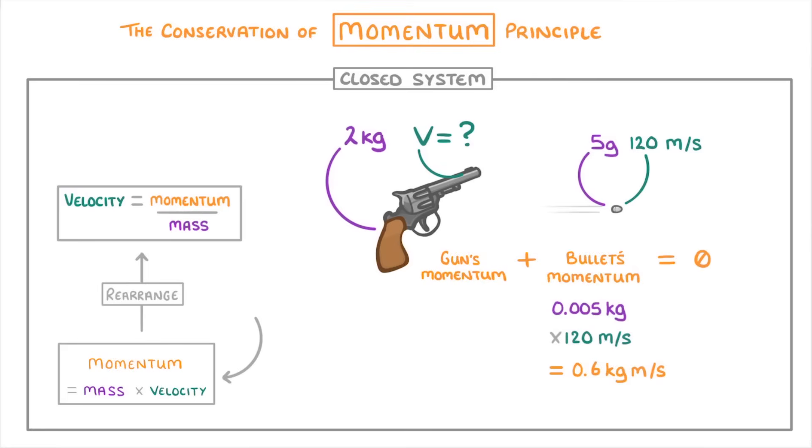Next, we want to try and find the gun's momentum. So again, we just do the mass of 2 times the velocity. But because we don't know what the velocity is yet, we can just write V for velocity. So the momentum will be 2V, where 2 is the mass in kilos, and V stands for the gun's velocity, which we're about to find out.